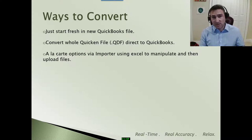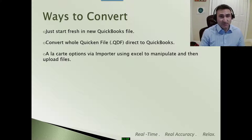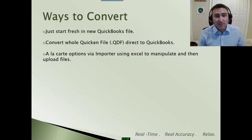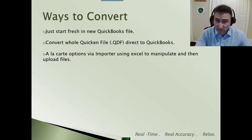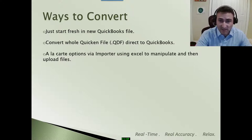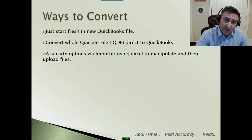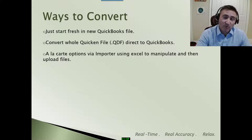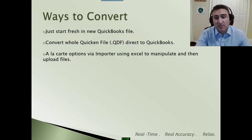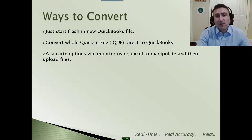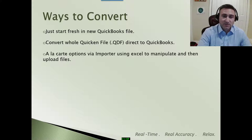There are three ways to convert, though this video is really only going to go over one of them. You don't have to actually convert — you can just start a new QuickBooks file and leave your Quicken file as a legacy copy. Another option is converting your Quicken QDF file directly into QuickBooks, which will bring over everything. Or there's a third option I call the a la carte option: you can export different reports from Quicken — whether it be a spending P&L report, an account report, or a register — into Excel, where you could further manipulate that data, perhaps change some of the payees, vendors, or categorization, and then using third-party software, bring that Excel CSV file into QuickBooks.